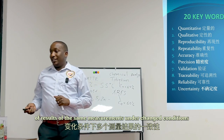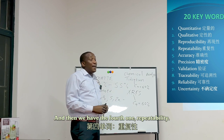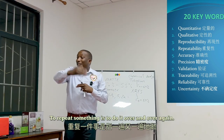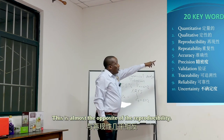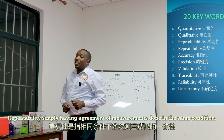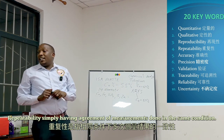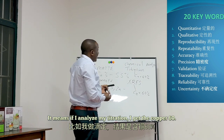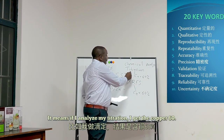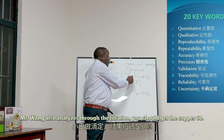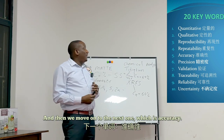The fourth word is repeatability. To repeat something is to do it over and over again — this is almost the opposite of reproducibility. Repeatability is simply having agreement of measurements done in the same conditions. It means if I analyze my titration and get copper at 60%, Mr. Wang also analyzes through the same titration and should also get copper at 60%.